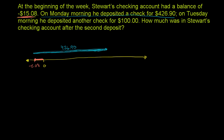Just after the Monday deposit, the amount he has left is the length of this pink arrow. The length of the orange arrow plus the length of the pink arrow equals the blue arrow. So the pink arrow — how far to the right we are of 0 — equals the length of the blue arrow minus the length of the orange arrow: $426.90 minus that orange length.